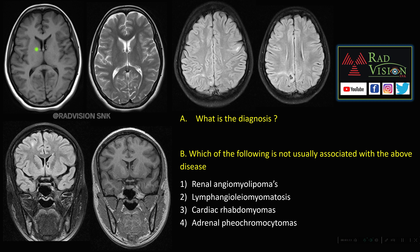Next case: you can see there are multiple subependymal nodules, radial white matter bands, and cortical tubers. There are also enhancing subependymal nodules. The diagnosis is tuberous sclerosis.